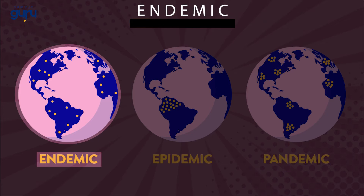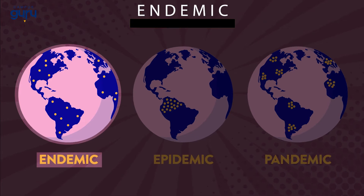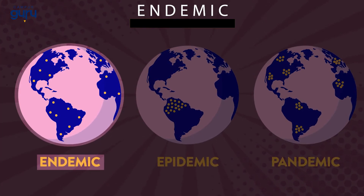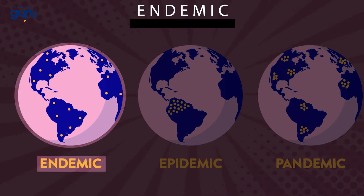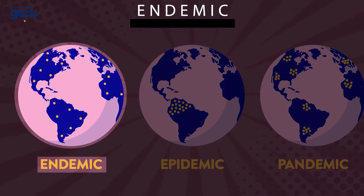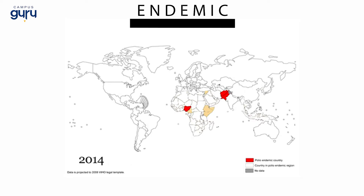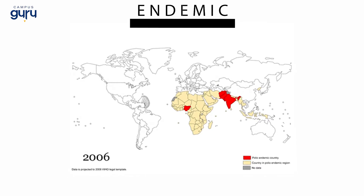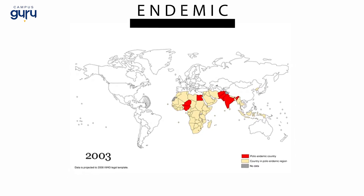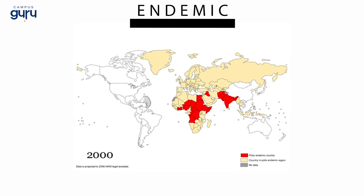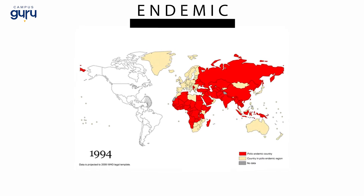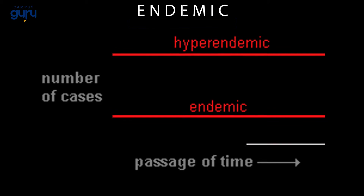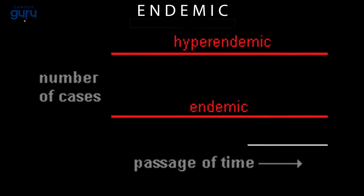Endemic. An endemic is a disease or the level of a disease which is present in a population or area all the time and not as an exception to the rule. The endemic level is the baseline level of a disease which is normal but not desirable. If the endemic level of a disease in a population is persistently high then it is referred to as a hyperendemic.